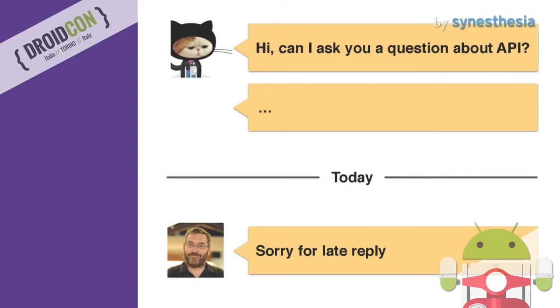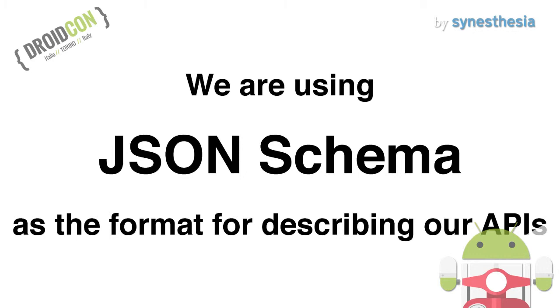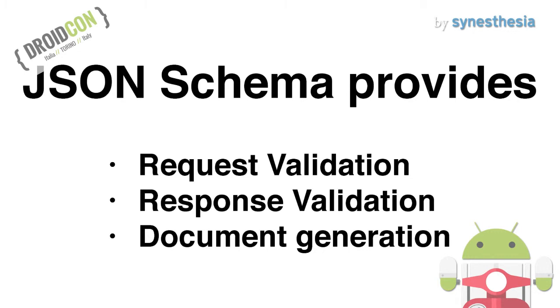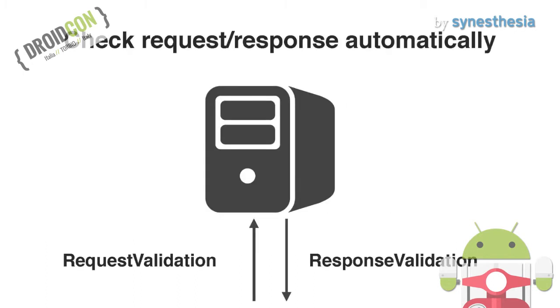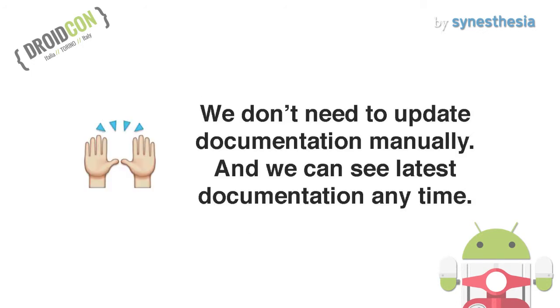Documentation. Keeping documentation updated in real time is hard. We are working in separated time zones, and there are times when I can't get a reply soon, so documentation is important. We are using JSON Schema as a format for describing our APIs. JSON Schema provides functions to maintain the API server easily — it checks request and response types automatically. We don't need to update documentation manually, so we can spend more time improving UX.